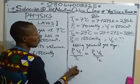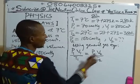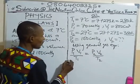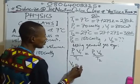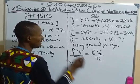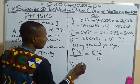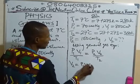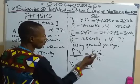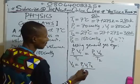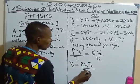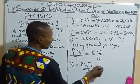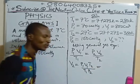We make V2 the subject of the formula. Cross-multiplying, V2 will now be equal to P1 times V1 times T2, all over T1 times P2.